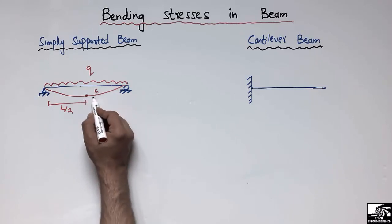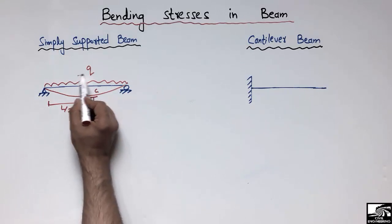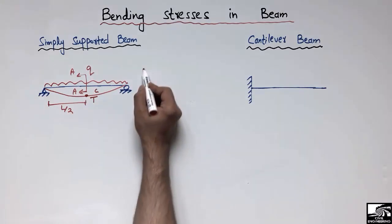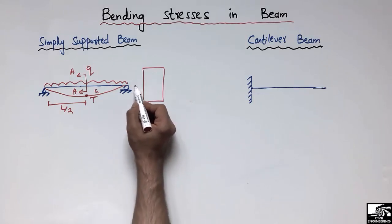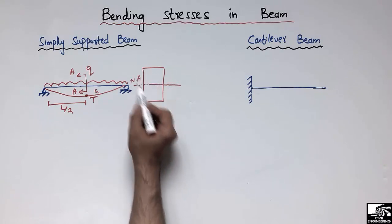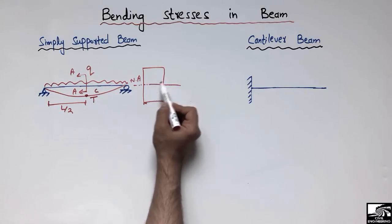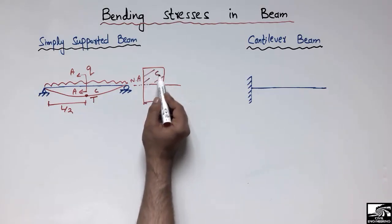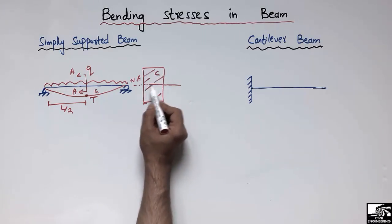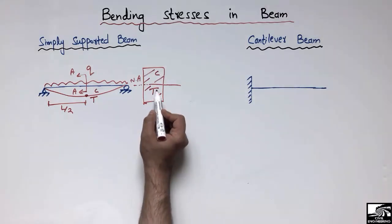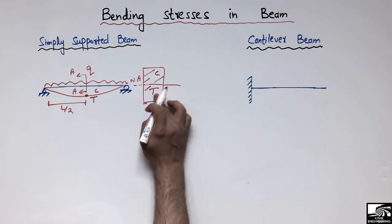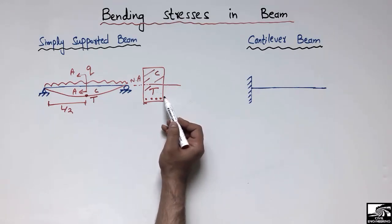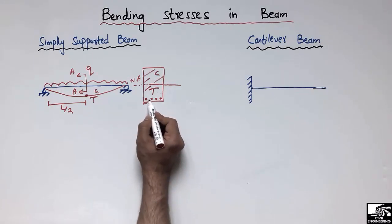Due to deflection, this beam will show compression at the top and tension at the bottom. Looking at the cross-section — with the neutral axis at the center — the top section above the neutral axis is in compression, while the bottom section below the neutral axis is in tension. Since concrete is weak in tension, we provide reinforcement at the bottom of the beam to increase the tensile capacity, making it a reinforced concrete beam.